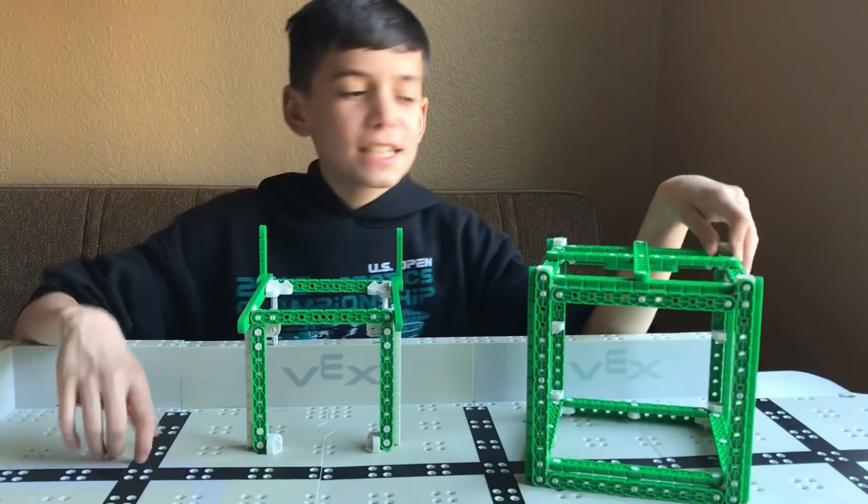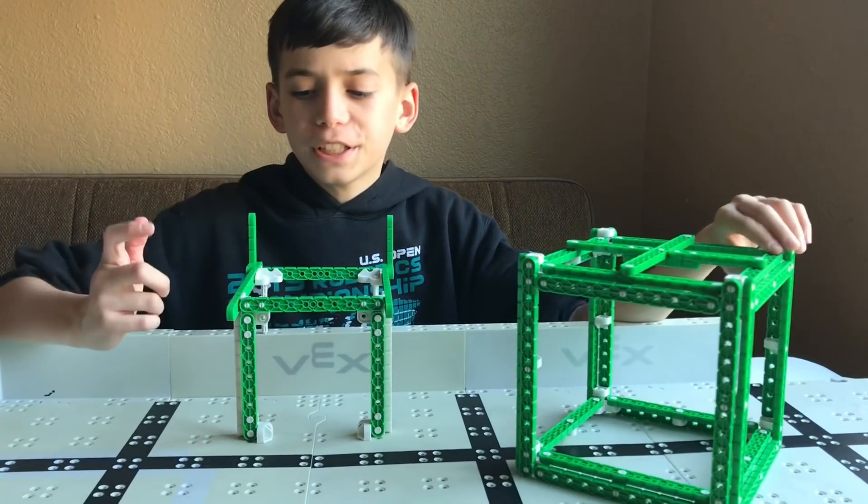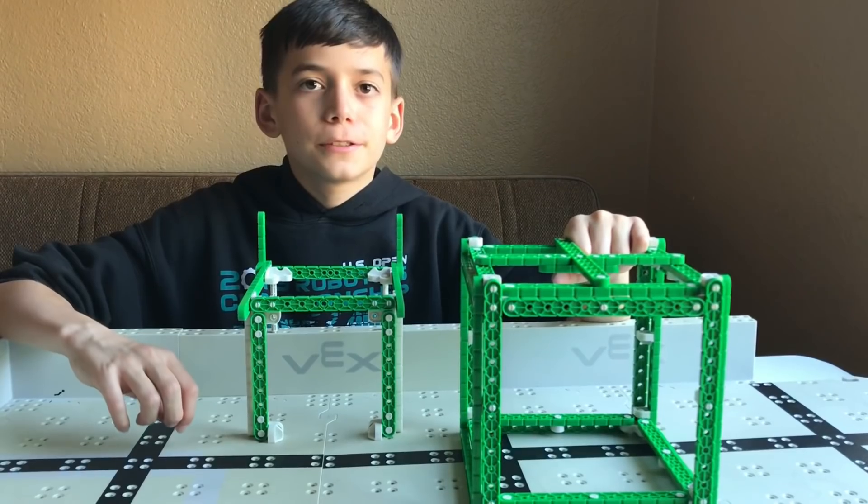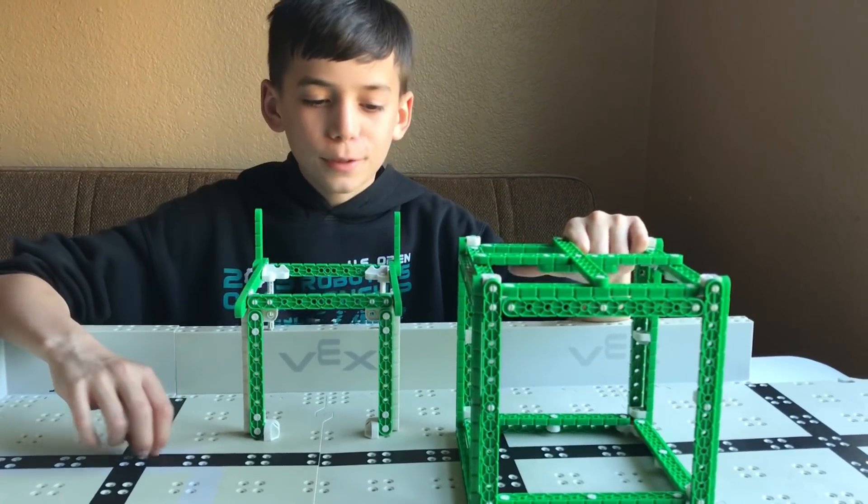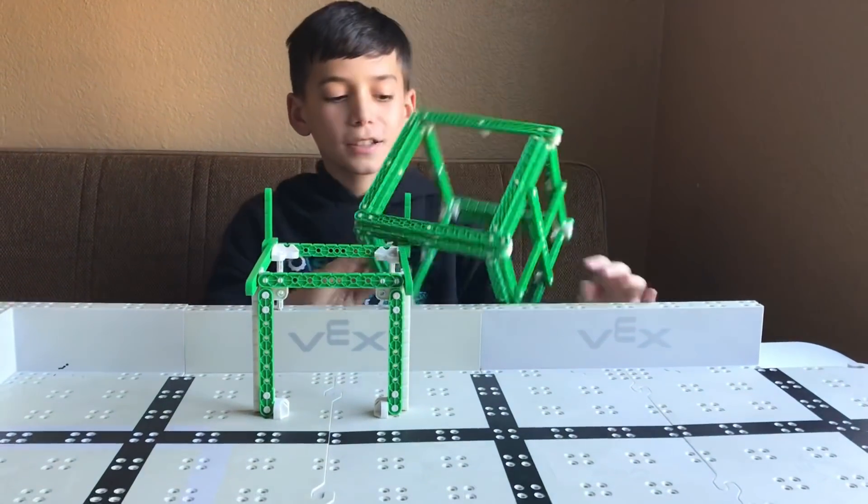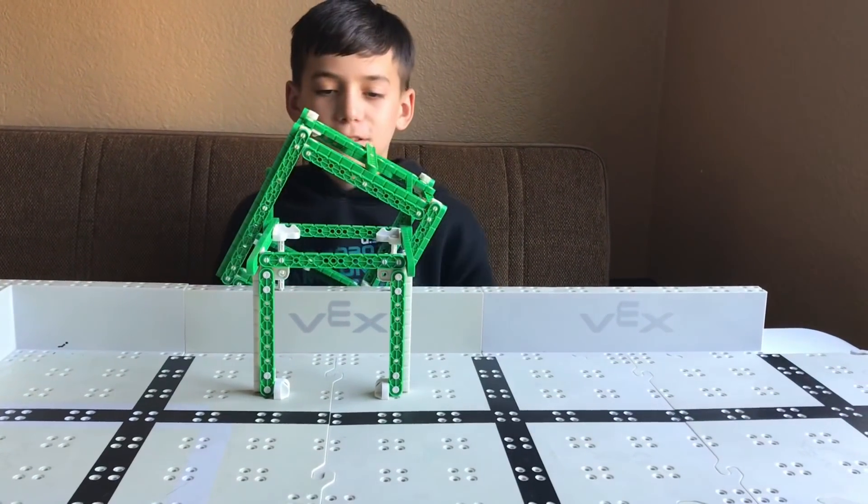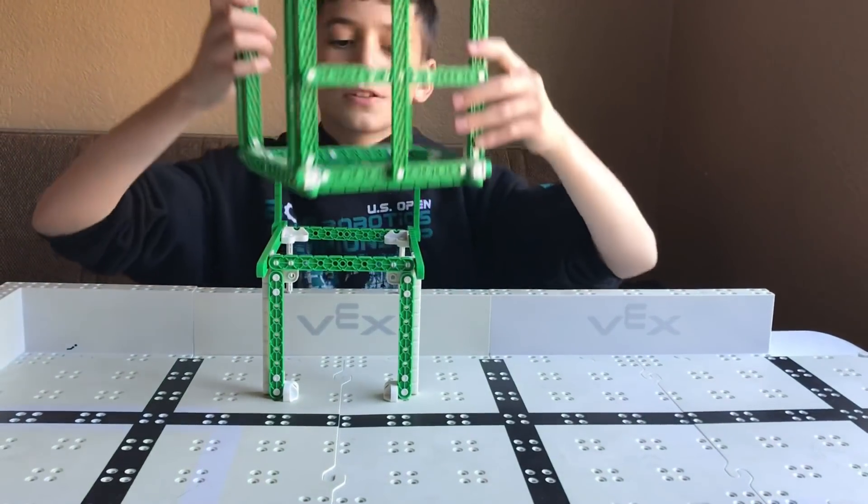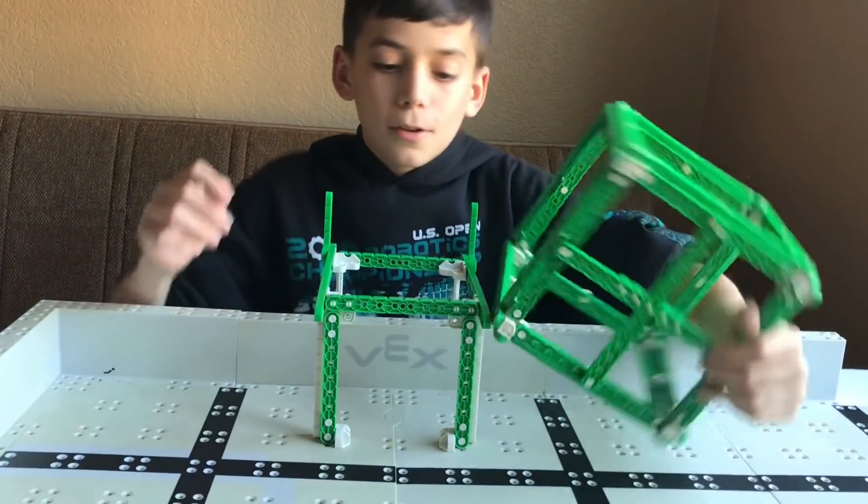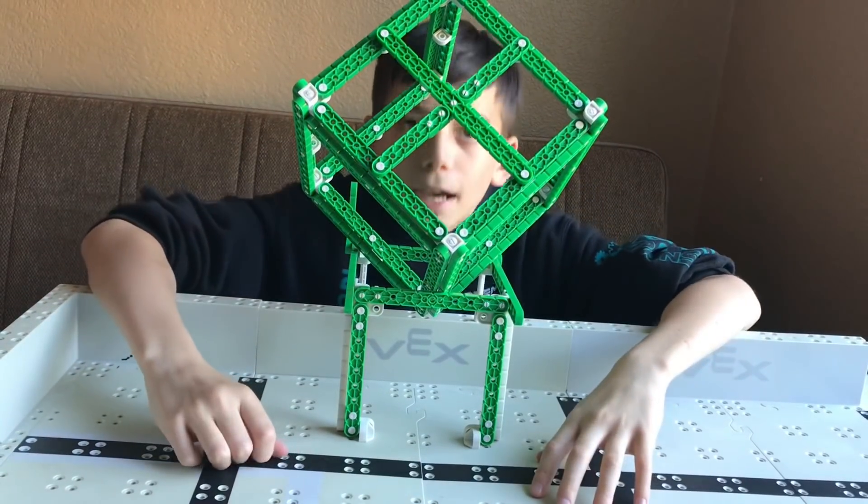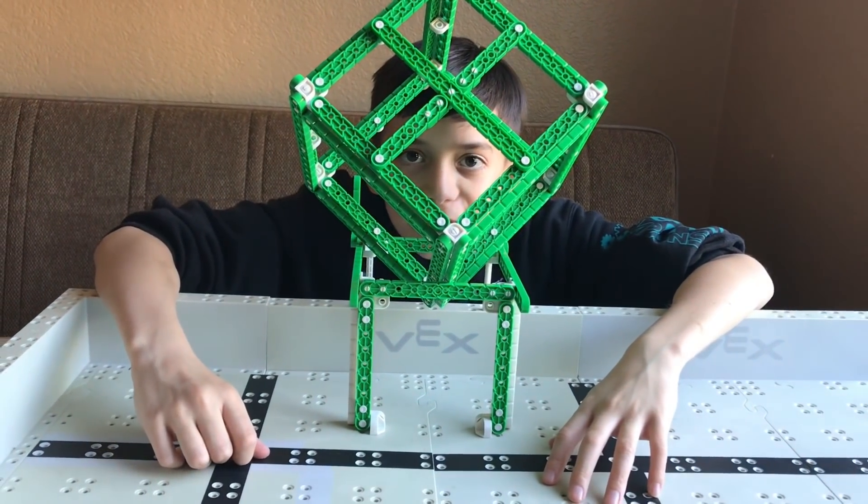All right guys, now we are going to be seeing the cube scoring for the smaller platform. I'm really sad to tell you this, but you can't do this because it's touching the field, or this because it's touching the field. You can either do this and it might fall off, or you can do this. This is the cube scoring for the small platform.